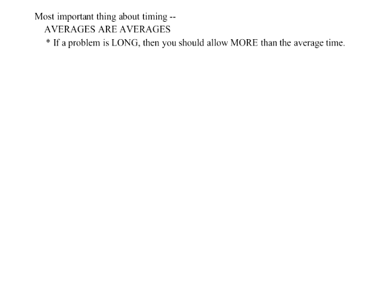Some problem types are faster — sentence correction probably should take a little bit less time than that. But the most important thing you can know about timing is that you should not try to take the average amount of time on every single problem. The averages are averages. So if a problem is long, you should allow more than the average time. If a problem is short, you should allow less than the average time. It's really time management more than anything else.